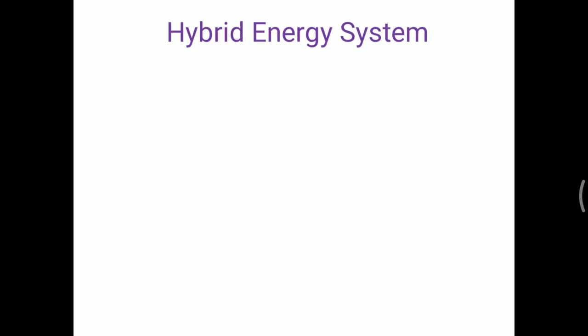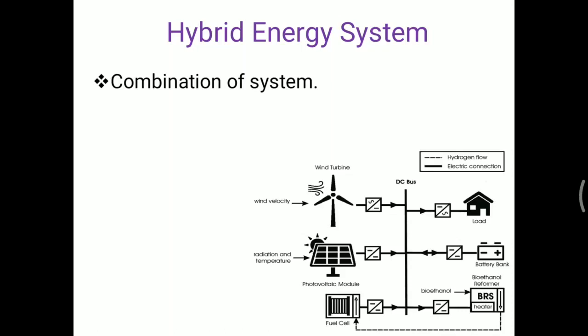We know that a hybrid energy system means the combination of two or more types of renewable energy systems. When we combine more than one energy system, we call it a hybrid energy system. In renewable energy systems, various types are available — for example, wind turbines, PV systems, biogas, diesel, biodiesel, and tidal energy.